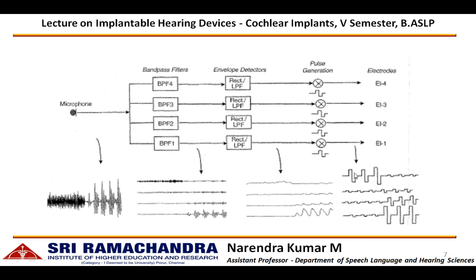These amplitude-modulated pulses are delivered to respective electrodes. If bandpass filter 1 corresponds to high frequency, then electrode 1 will be placed at the basal end of the cochlea and delivers high frequency information. Bandpass filter 4 corresponds to low frequency, so electrode 4 will be located at the apical end of the cochlea and delivers that information. These operations are performed at the level of the speech processor, irrespective of the type of speech coding strategy involved.